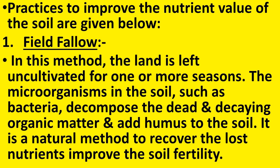The first practice to improve the nutrient value of the soil is field fallow. In this method, the land is left uncultivated for one or more seasons. The microorganisms in the soil, such as bacteria, decompose the dead and decaying organic matter and add humus to the soil. It is a natural method to recover the lost nutrients and improve the soil fertility.